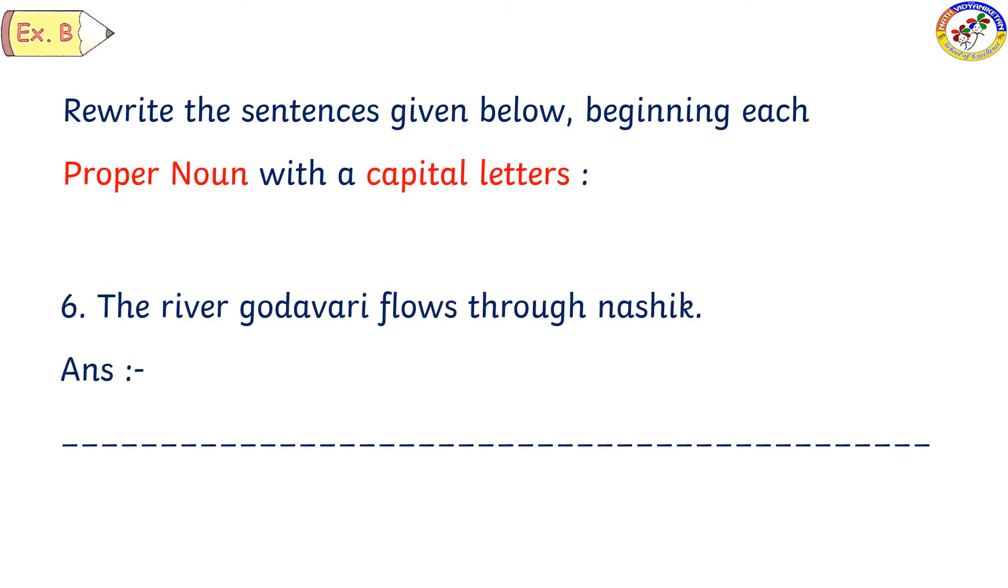The river Godavari flows through Nashik. So river Godavari, Godavari is a river name, it is a special name. Flows through Nashik, which is a city name. Both places we can see they're starting with small letters.